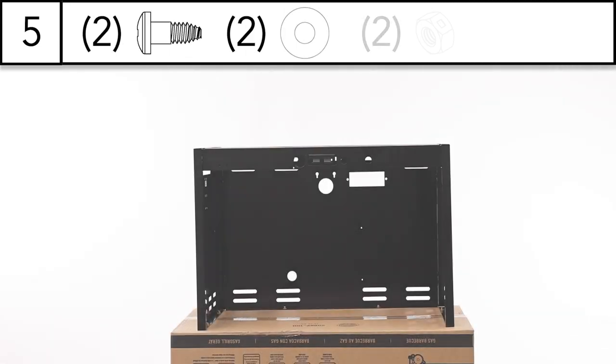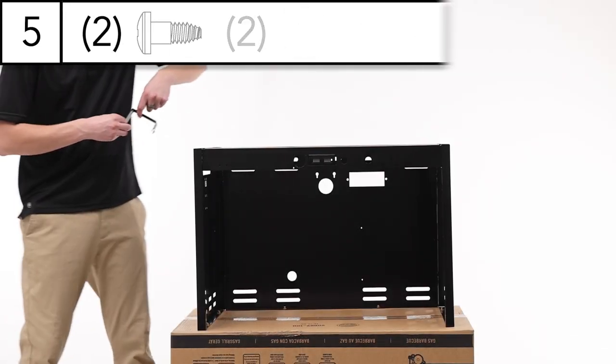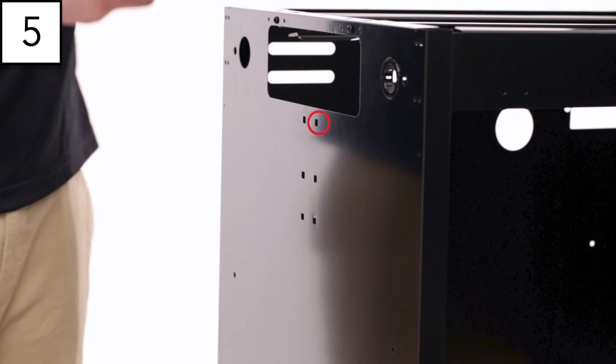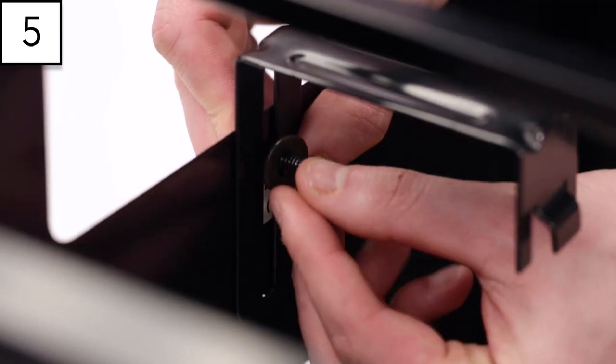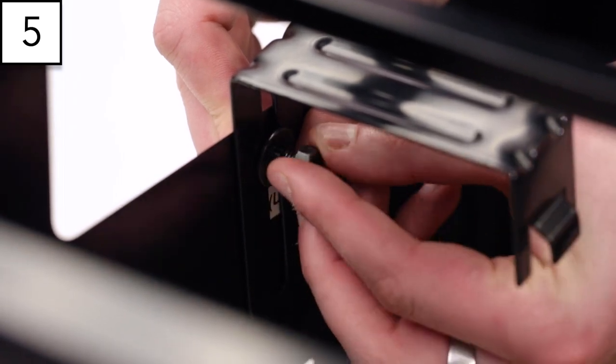Step 5: Install the tank retainer bracket on the left-hand side panel in the top and middle square holes that are closest to the front of the grill. Secure using two bolts, washers and locking nuts.